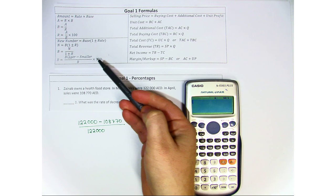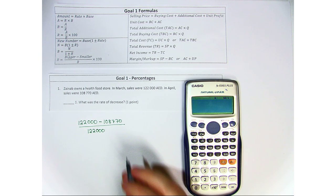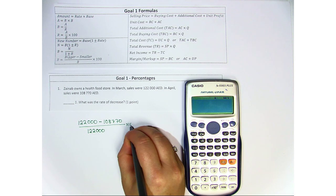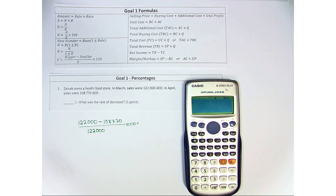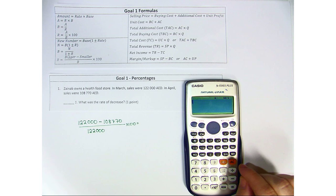And then the very last step, according to our formula, is to multiply it by 100. We do this with all rate problems because the answer we'll get is a decimal or a fraction. And to convert, we have to multiply by 100.